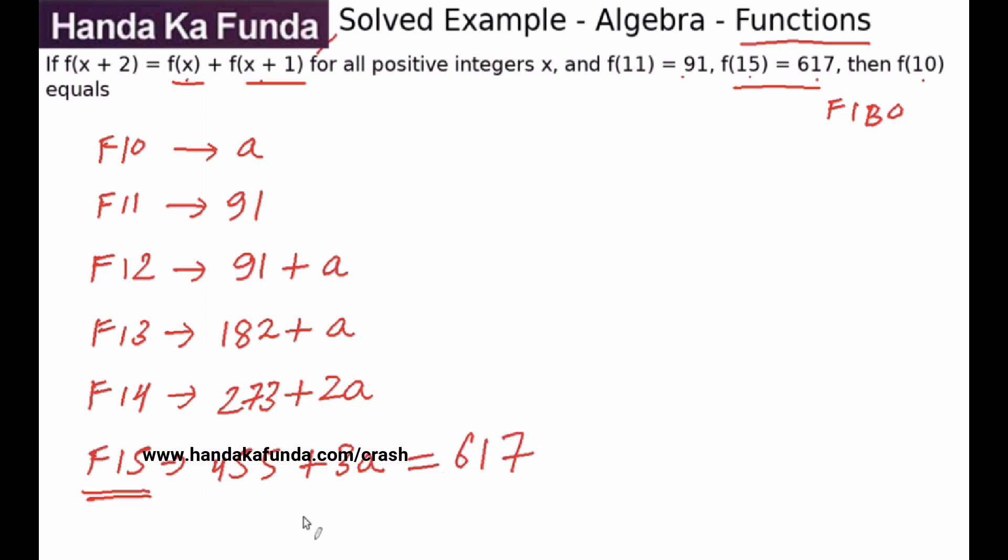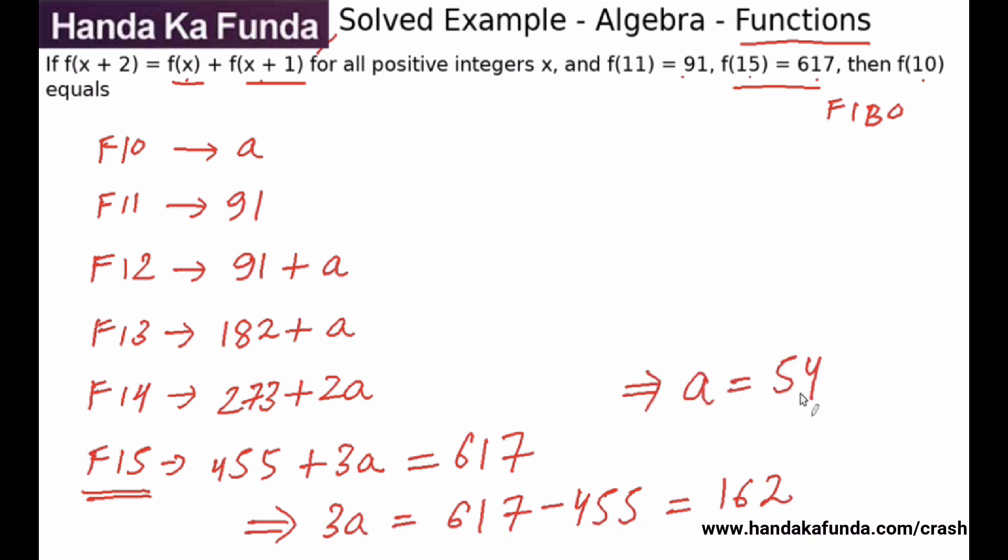So this is the equation that I have, which gives me the value of 3a as 617 minus 455. So how much will that be? I have 145 plus 17, that is 162, which will give me the value of a as 54, and a is nothing else but the value of f10 that we had assumed, which means the answer for this particular question is 54.